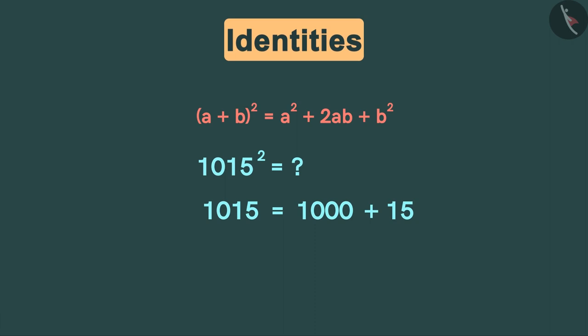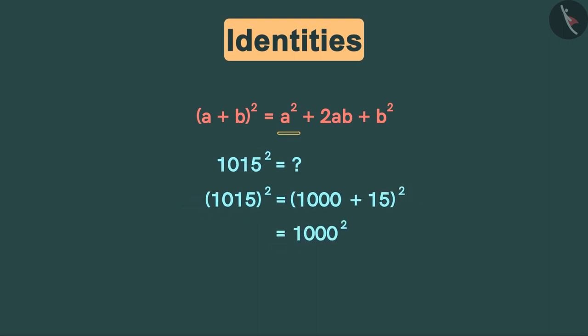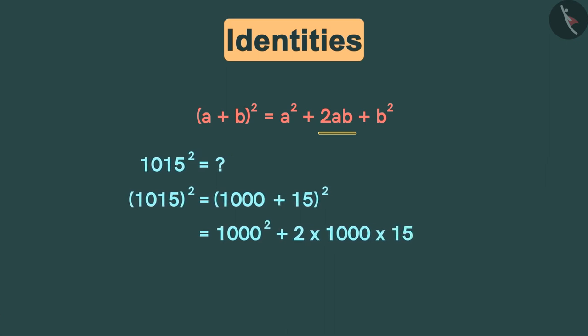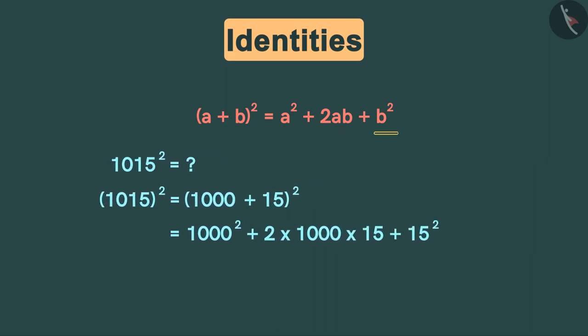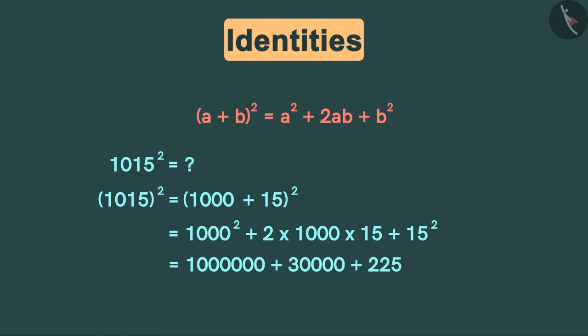Now let's apply the identity. We will consider the value of a as 1000 and the value of b as 15. Now we will apply the identity and expand this, so a² will become 1000², in the same way 2ab will be written like this, and b² will be like this. After simplification we will get this answer.